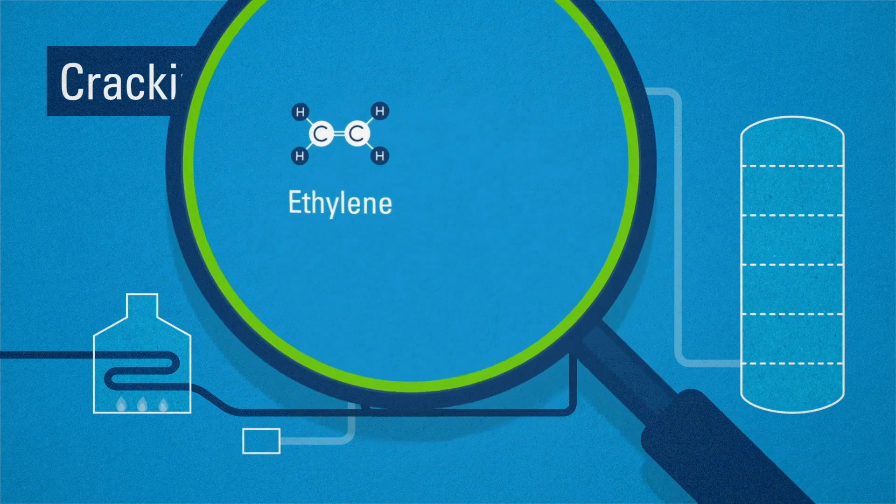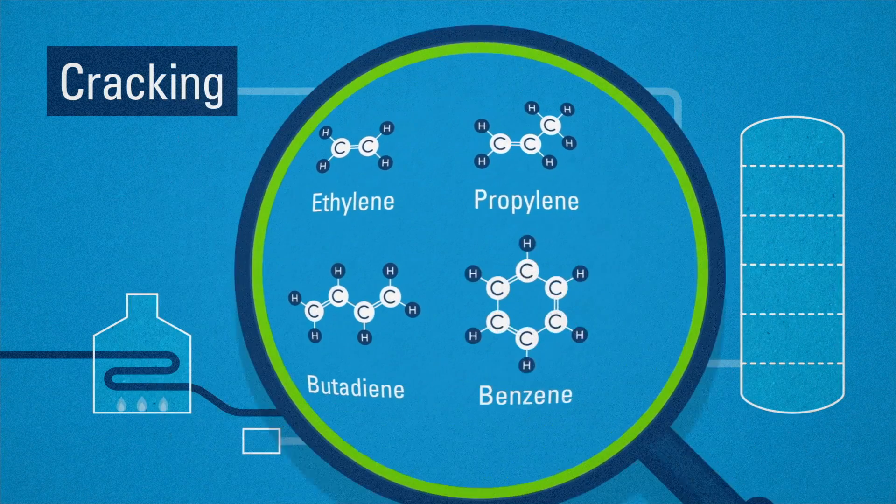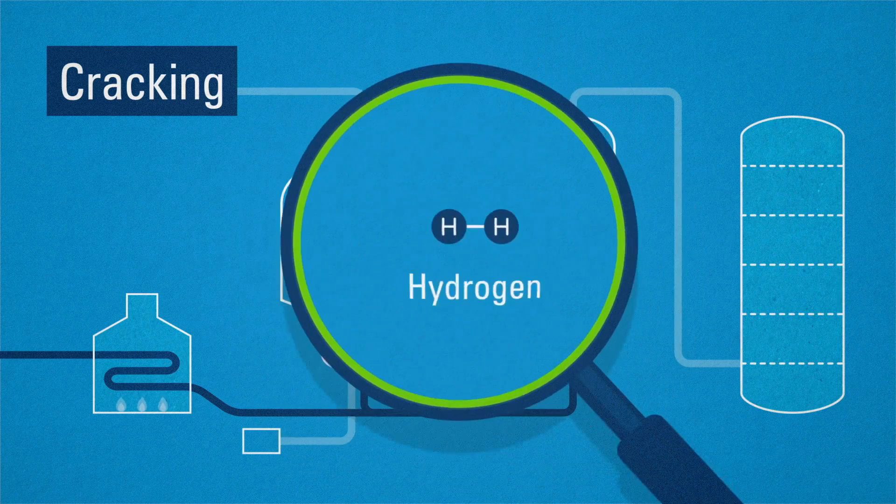These give you ethylene, propylene, butadiene and benzene as well as many other by-products like hydrogen.